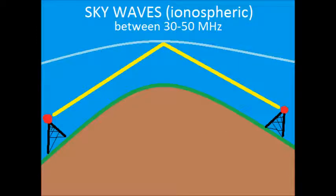If you can't see each other through line of sight, you can use a thing called sky waves, ionospheric. And that's bouncing off the ionosphere. This is between 30 and 50 megahertz. As long as they're both at the proper orientation and angle, you can actually bounce off our atmosphere and transmit extreme long distance, even across the Earth.